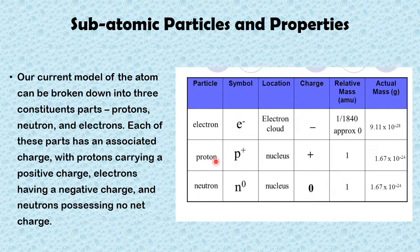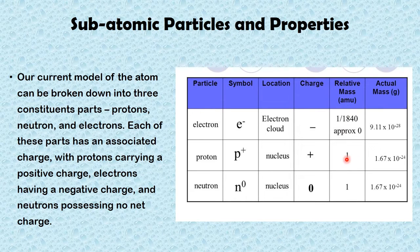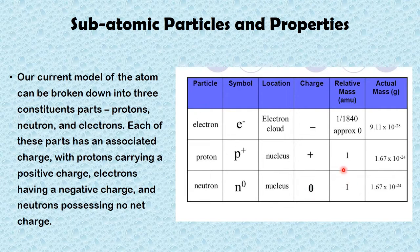In the case of the proton, it carries a positive charge and is located in the nucleus. Its relative atomic mass unit is 1, and this is its actual mass. In the case of the neutron, it is also found in the nucleus, carries no charge — in other words, it is neutral — and its relative mass is also 1, the same as the proton.